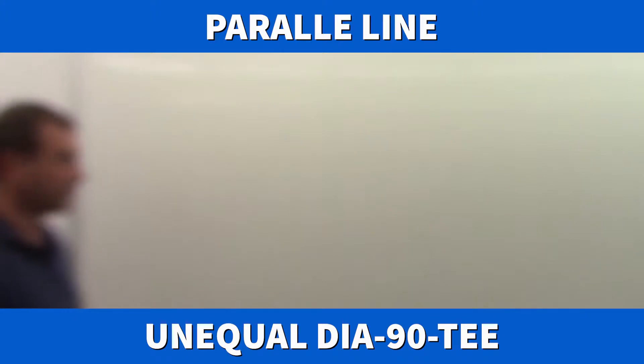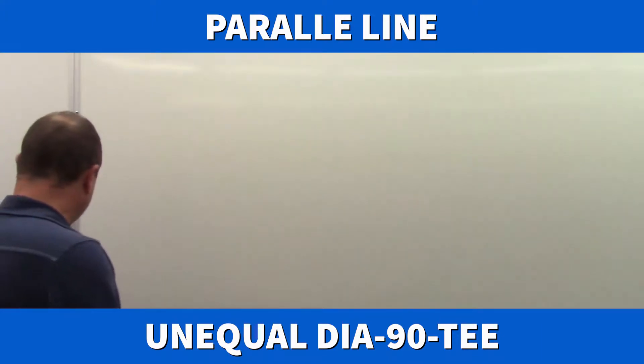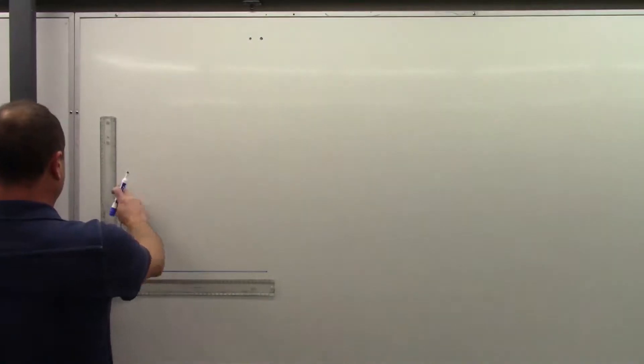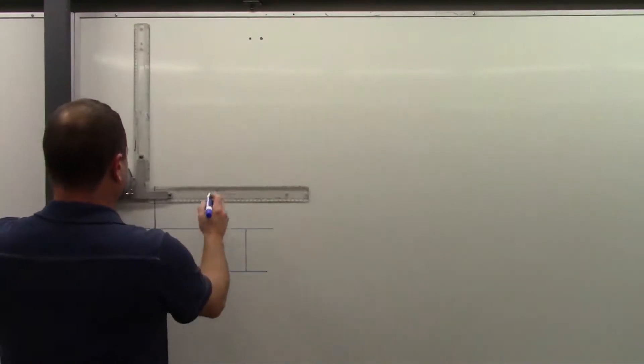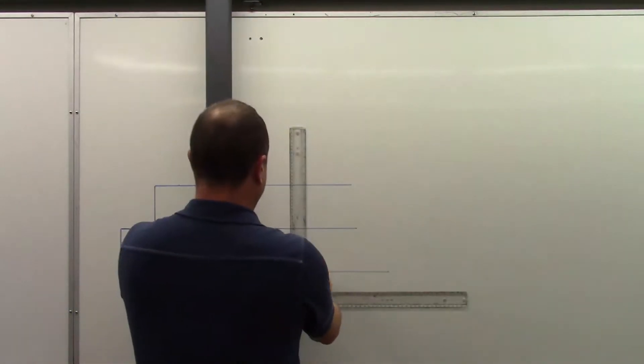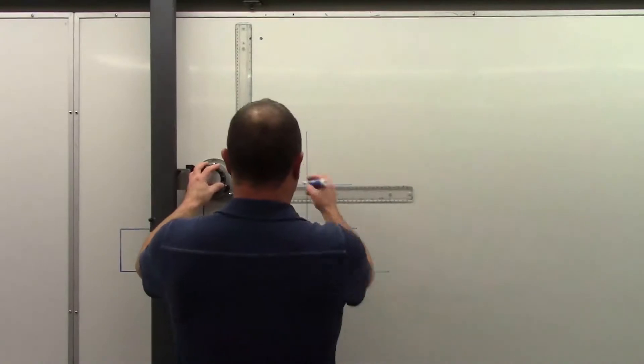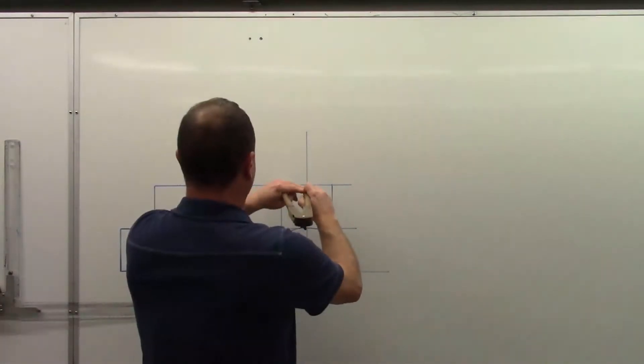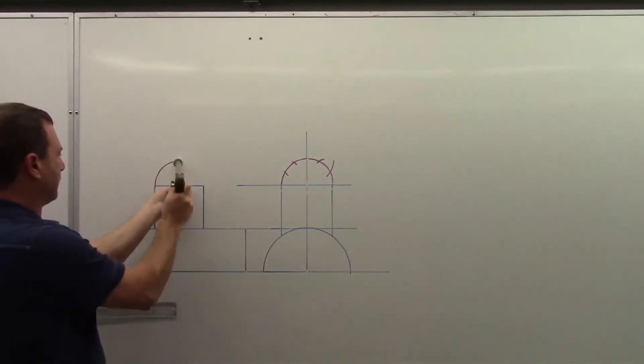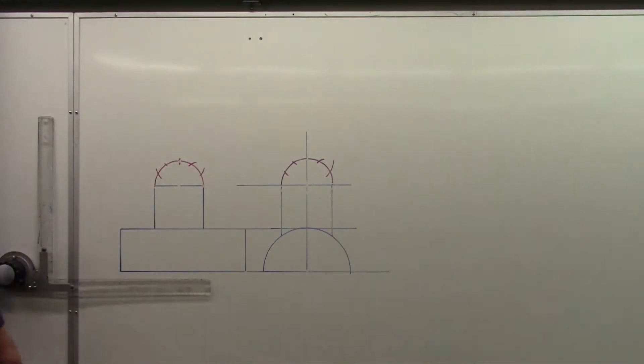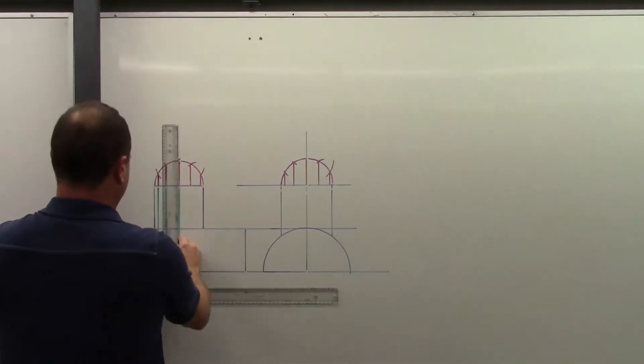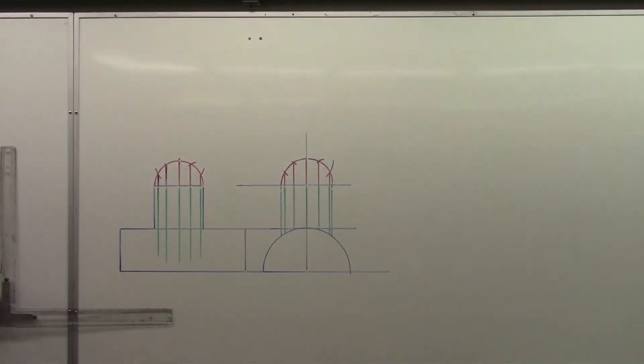Now, first thing we want to do is establish our plan and elevation view, so let's go ahead and draw that in. Now we have our full side elevation and end view. We can start to establish our miter line and then go into our stretch out and pattern from there.